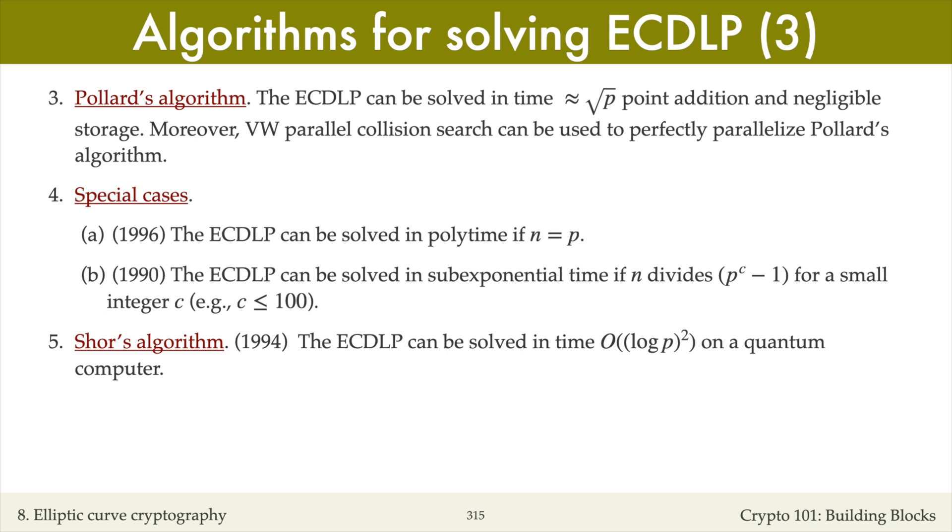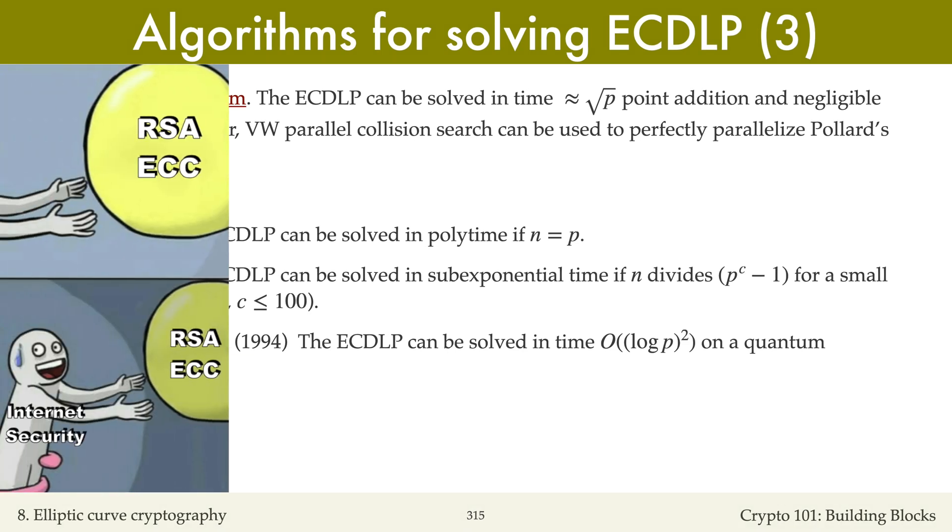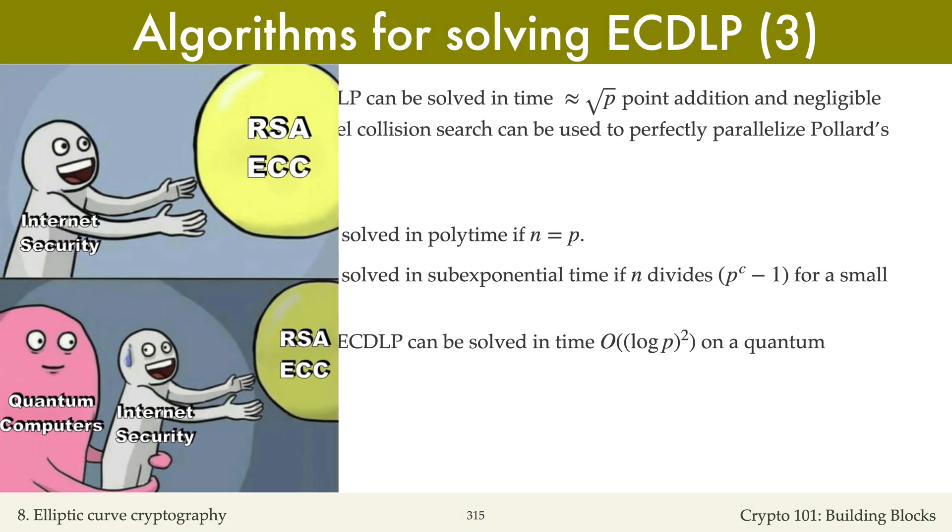So, the most widely used public key cryptosystems today, RSA and elliptic curve cryptography, can both be totally broken by quantum computers. We don't know as yet if and when cryptographically relevant quantum computers will be built.